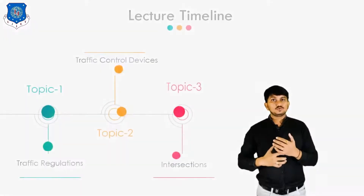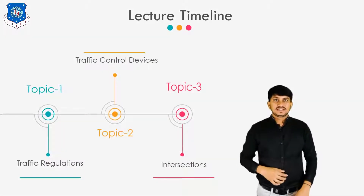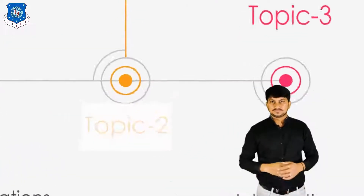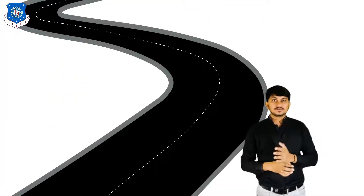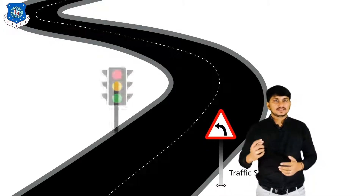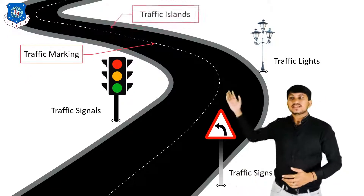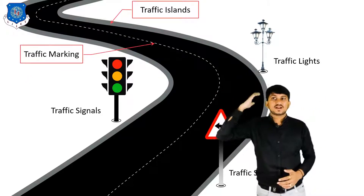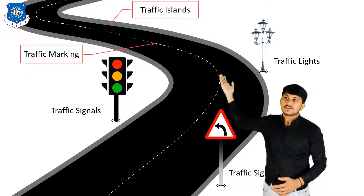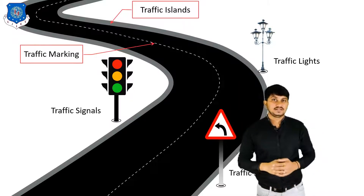Now let's move to our second topic which is Traffic Control Devices. The various aids and devices which are used to control, regulate and guide traffic may be called Traffic Control Devices. Broadly, this falls into 5 categories: first is Traffic Sign, second is Traffic Signal, third is Traffic Light, fourth is Traffic Marking, and fifth is Traffic Islands.